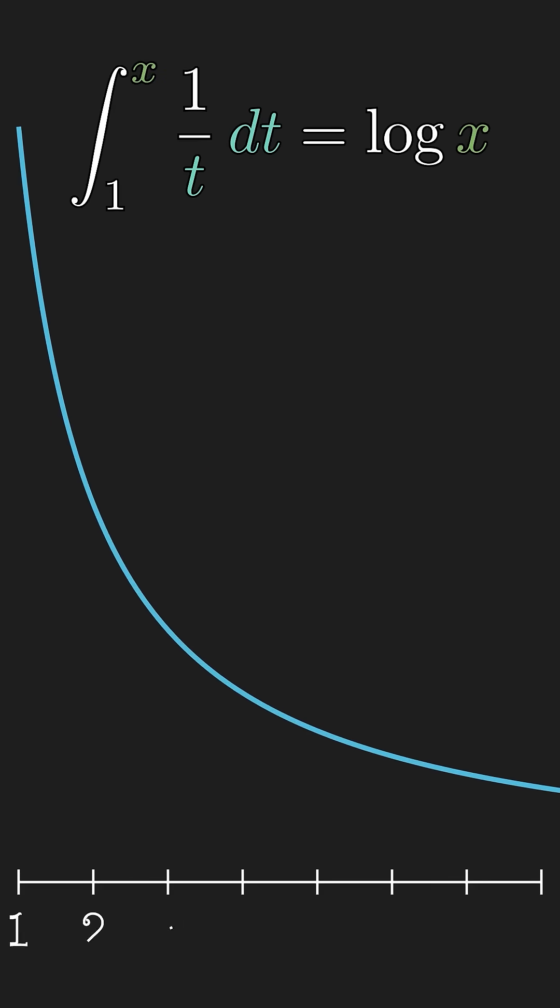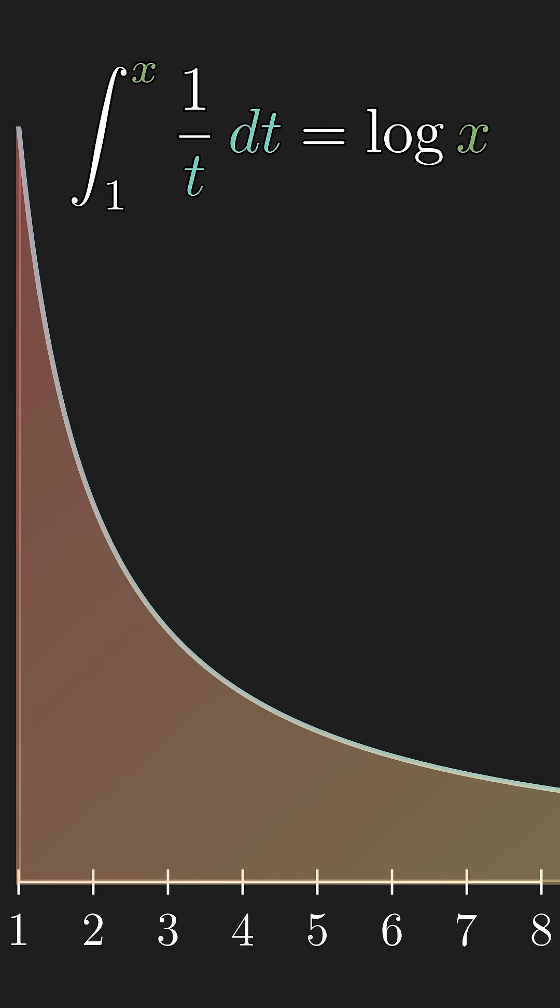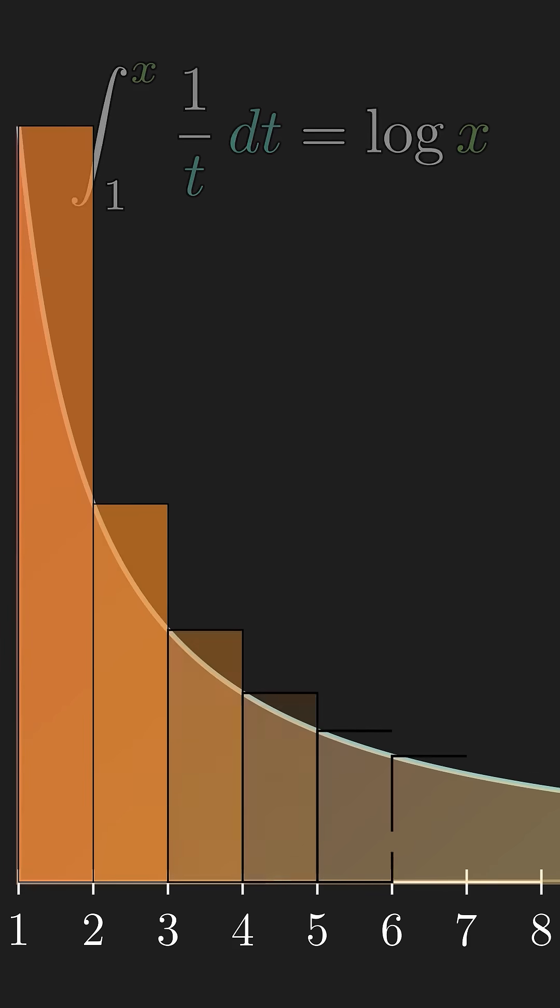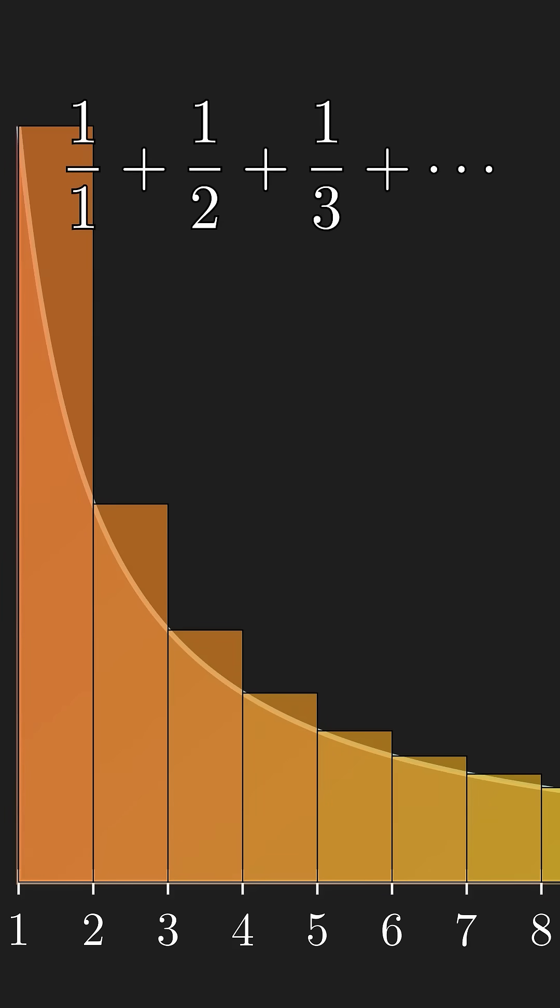The integral of 1 over x is the natural log, so the total area diverges to infinity. From this fact, we can deduce that the harmonic series diverges as well.